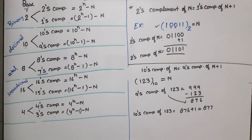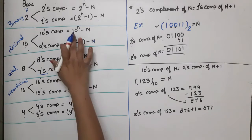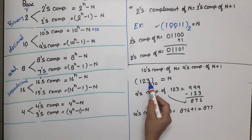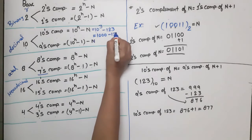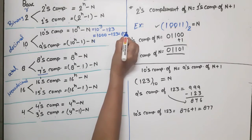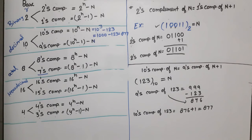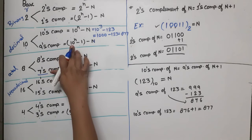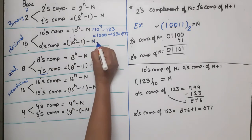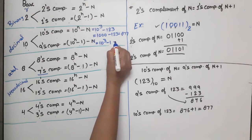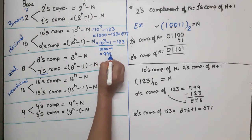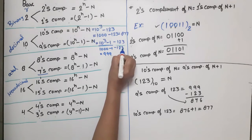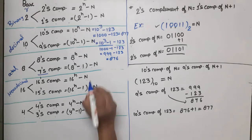For 10's complement of 123: take the 9's complement (876) and add 1, giving 877. You can verify using the formula: 10^3 − 123 = 1000 − 123 = 877. Both methods give the same answer. The shortcut works because 10^n−1 = 999...9 (n nines), which is what we subtract the number from to get the 9's complement.